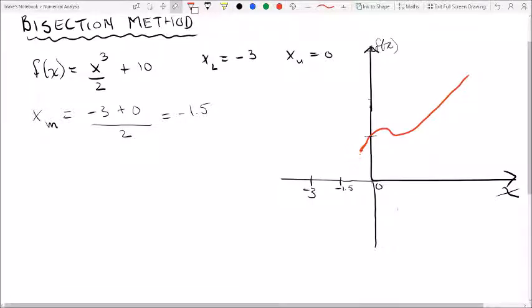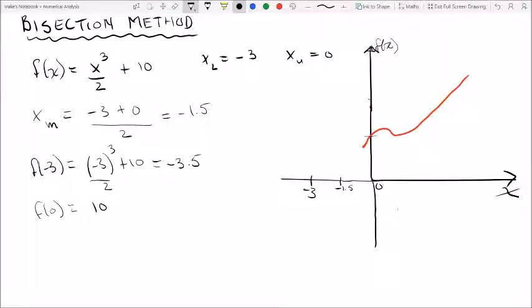In order to do that we need to do a couple checks. But first let's evaluate our function values at -3 and at x = 0. So now we have our function values: -3.5 at -3 and 10 at 0.